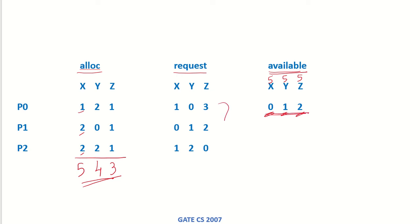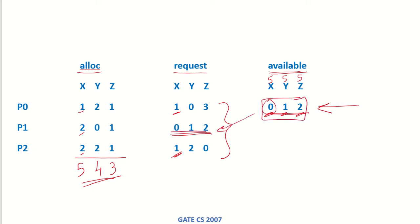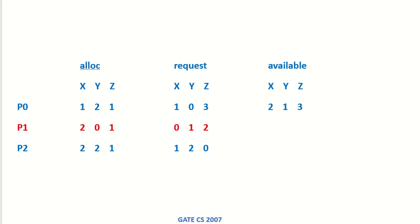Looking at the requests of these processes, P1 is the process whose request can be managed by the available resources. We cannot manage the request of P0 because we have a shortfall, and similarly for P2. So the only request that can be managed is for process P1. We give the available resources to P1 so that P1 can complete its execution, after which it will release its allocated resources.